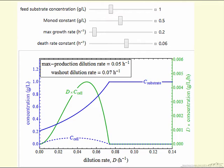So we'll look at the simulation and see how, as we change these various parameters, the maximum production rate and the washout rate change.